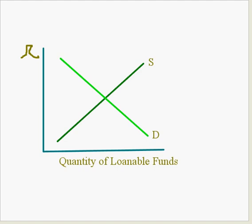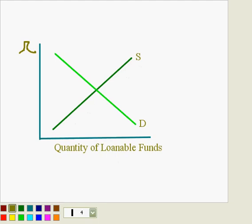For example, if the government decides to decrease taxes, they have to find a way to replace that money that they borrowed. So what they'll do is they will borrow money from the loanable funds market, which effectively shifts demand for loanable funds to the right, increasing interest rates and increasing the quantity supplied of loanable funds.